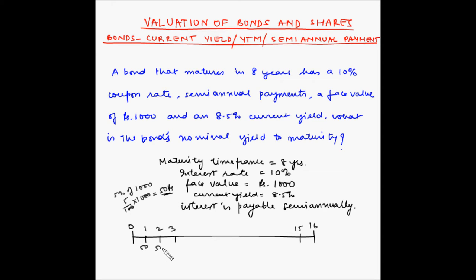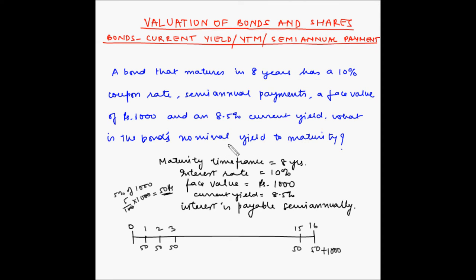So fifty rupees is the interest that the investor will receive at the end of every six months. And of course, at the end of the tenure, the investor will also receive the maturity value, which is one thousand rupees. Now we have to find out the bond's nominal yield to maturity, which is basically the annual yield to maturity.